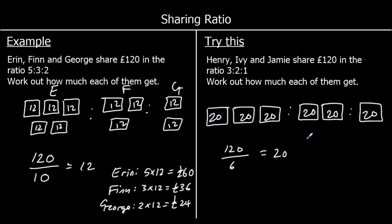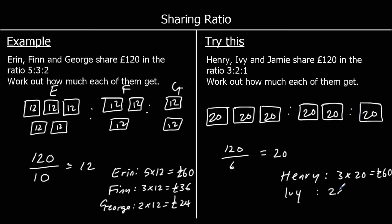So each box has £20 in it. So how much do each of them get? Henry gets three twenties, which is £60. Ivy gets two twenties, which is £40. And Jamie gets one twenty, which is £20.